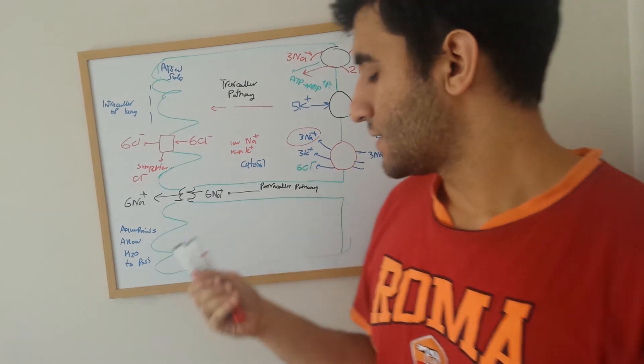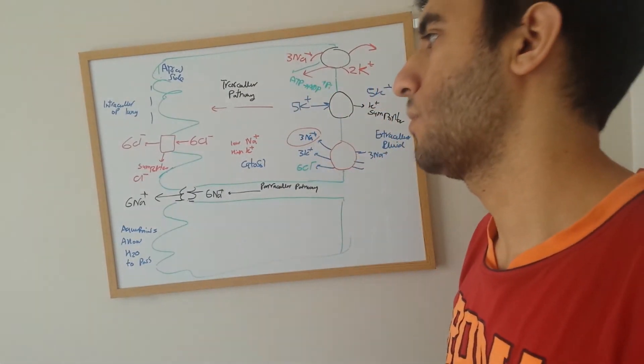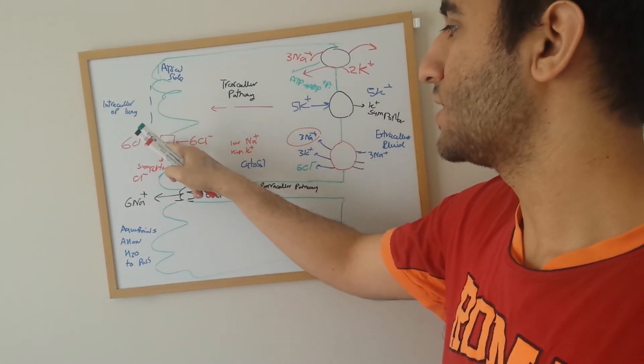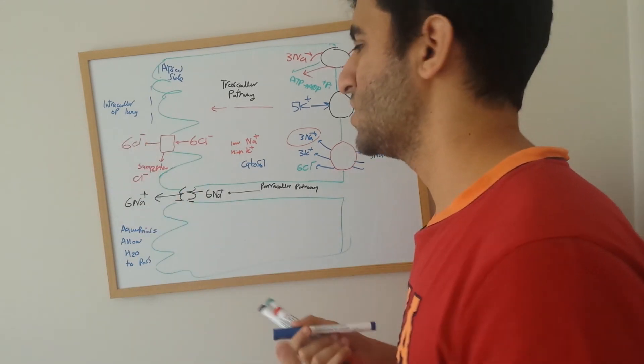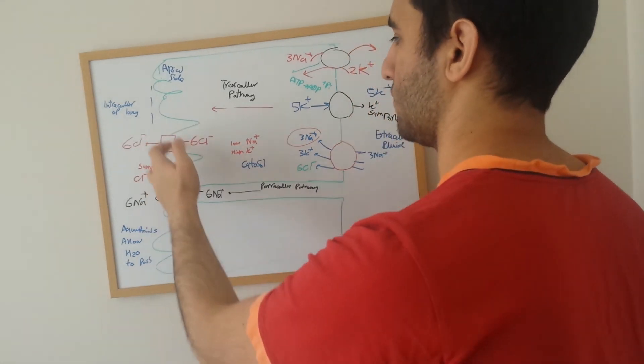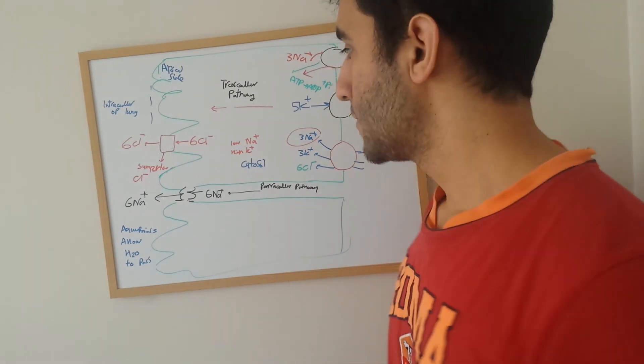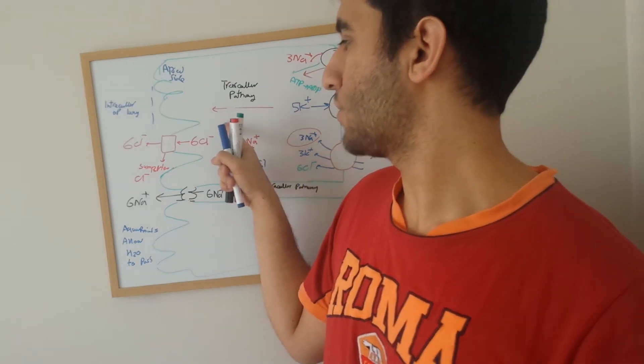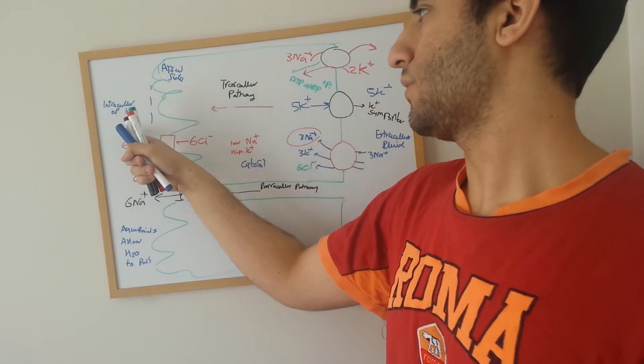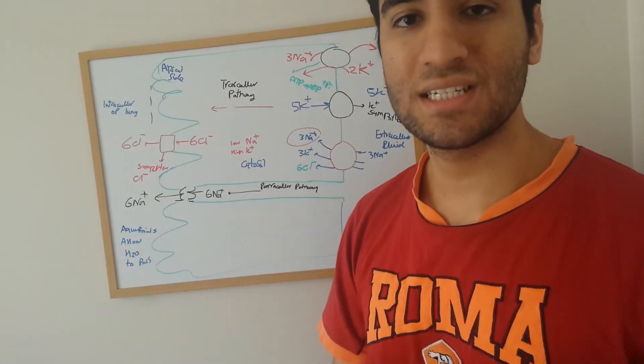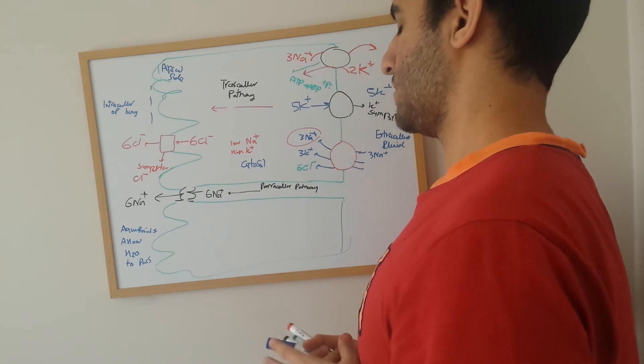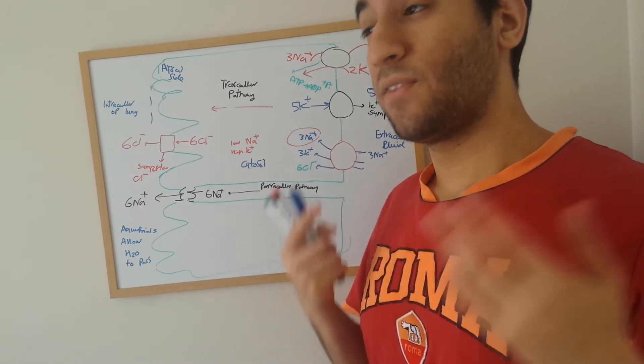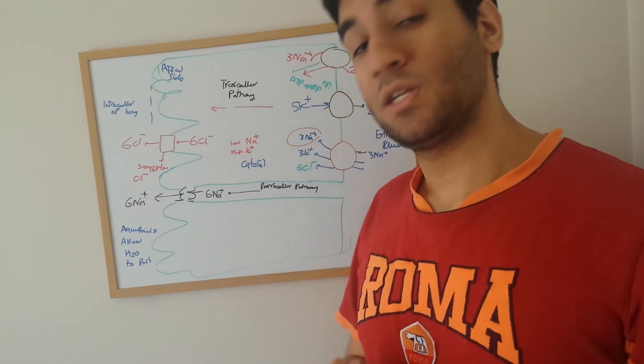But the thing is, people who have cystic fibrosis lack a specific CFTR gene. The CFTR gene is responsible for formation of this chloride transporter. Those who have a deformed chloride transporter cannot pass chloride from here to the intracellular apical side. The apical side chloride transporter is deformed. As a result, chloride cannot be passed through, sodium will not be passed through. We are not observing the increase in osmolarity of the cell.